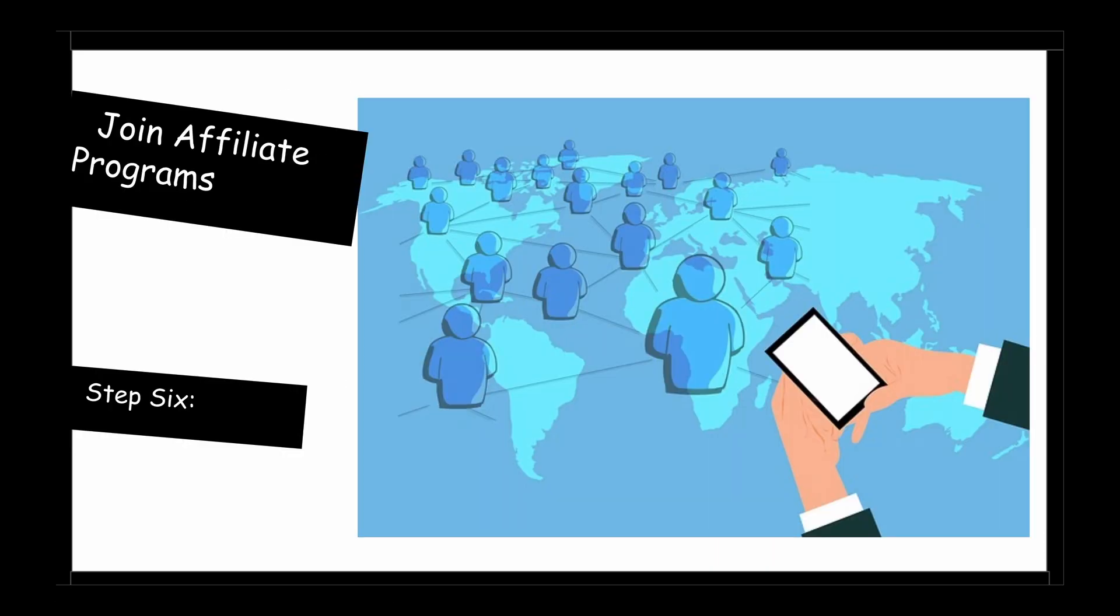Step six, join several affiliate programs. Now it's time to join some new affiliate programs. My preference is to join software companies that pay recurring commissions, ongoing every month. This will give you the passive income that you need that you can set yourself free.